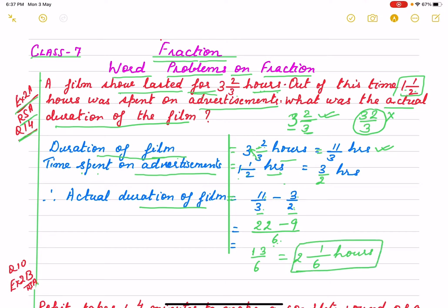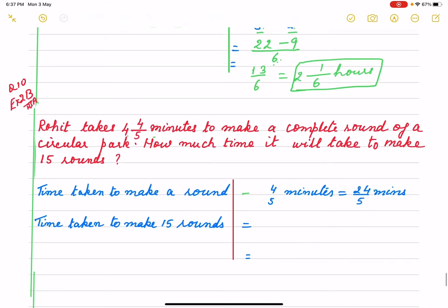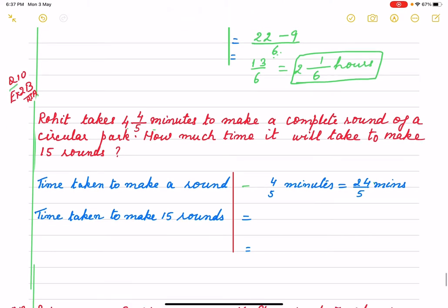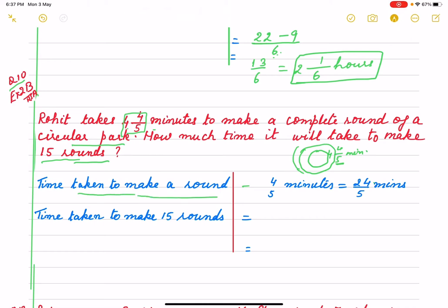The second question is Exercise 2B, question number ten. Rohit takes four and four by five minutes to make a complete round of a circular park. How much time will it take to make fifteen rounds? If it is two rounds that is two times the time, three rounds is three times — so fifteen rounds means fifteen times the required time. Statement: time taken to make one round = four and four by five minutes.